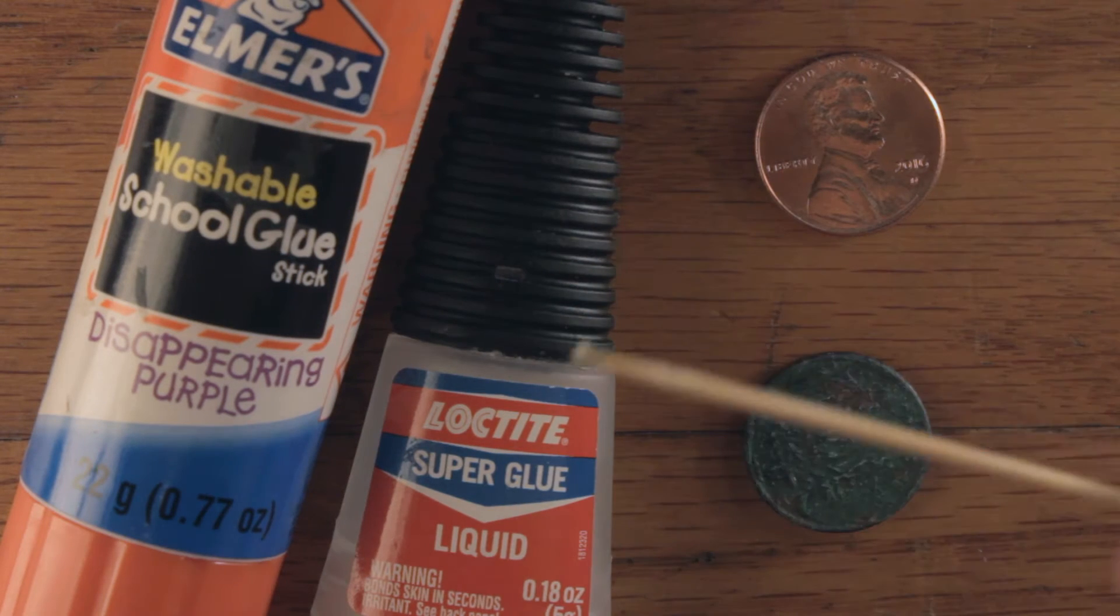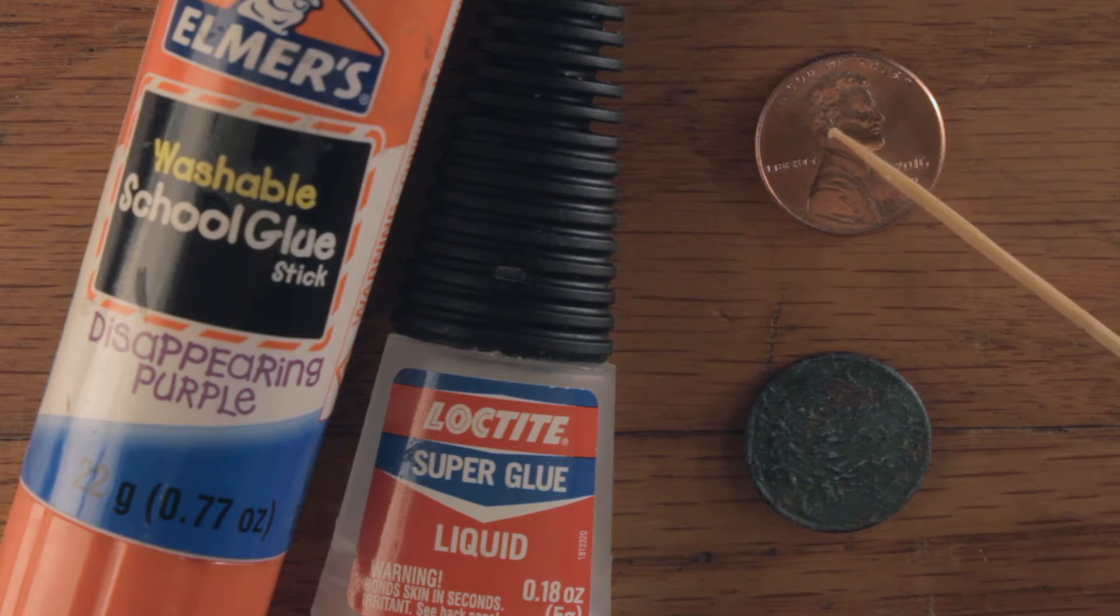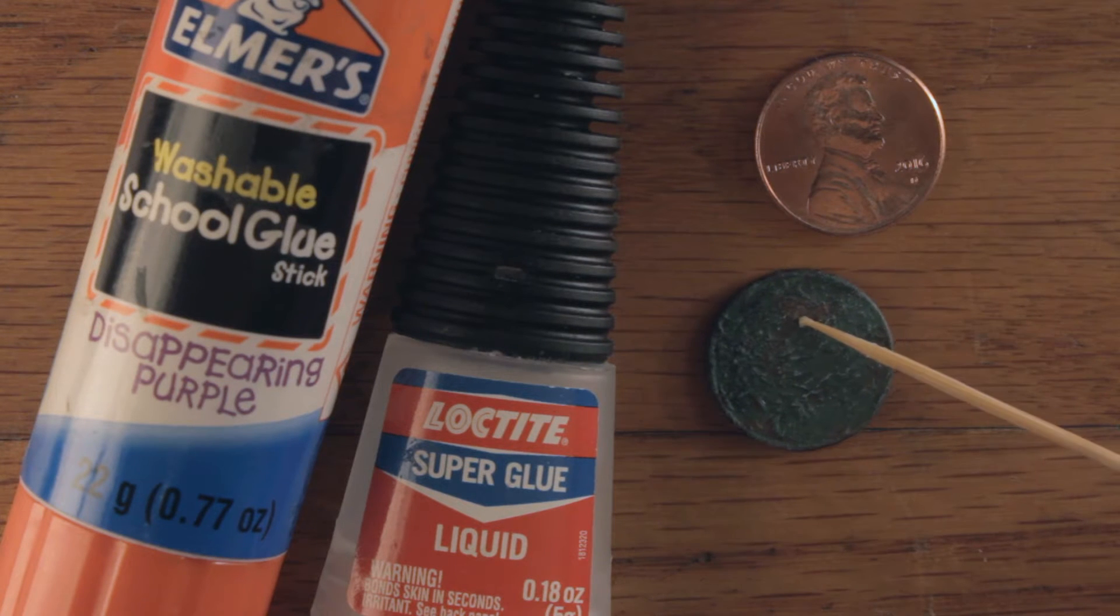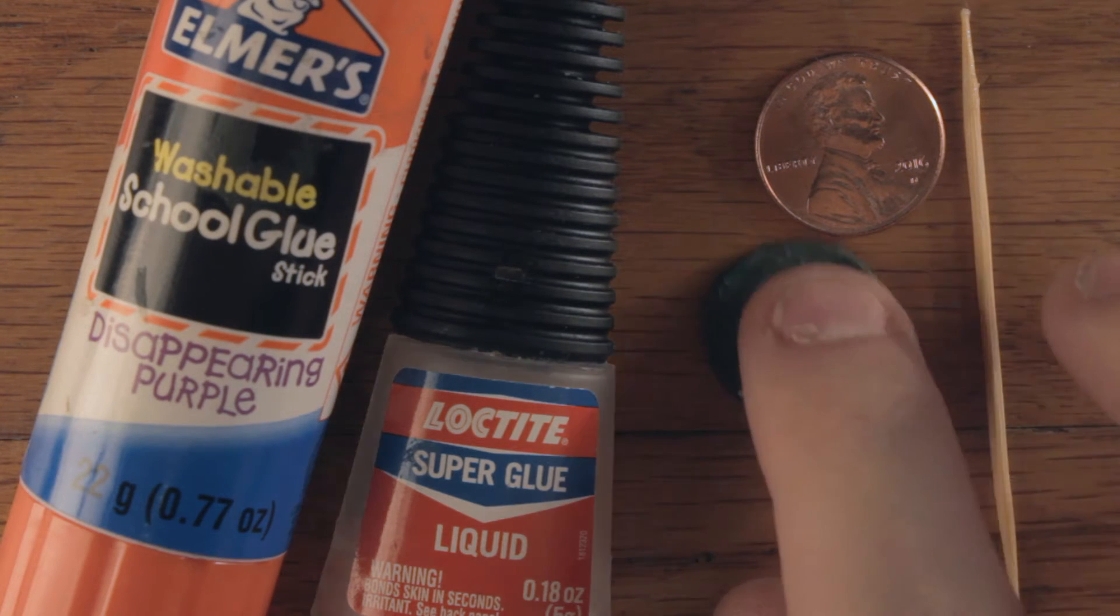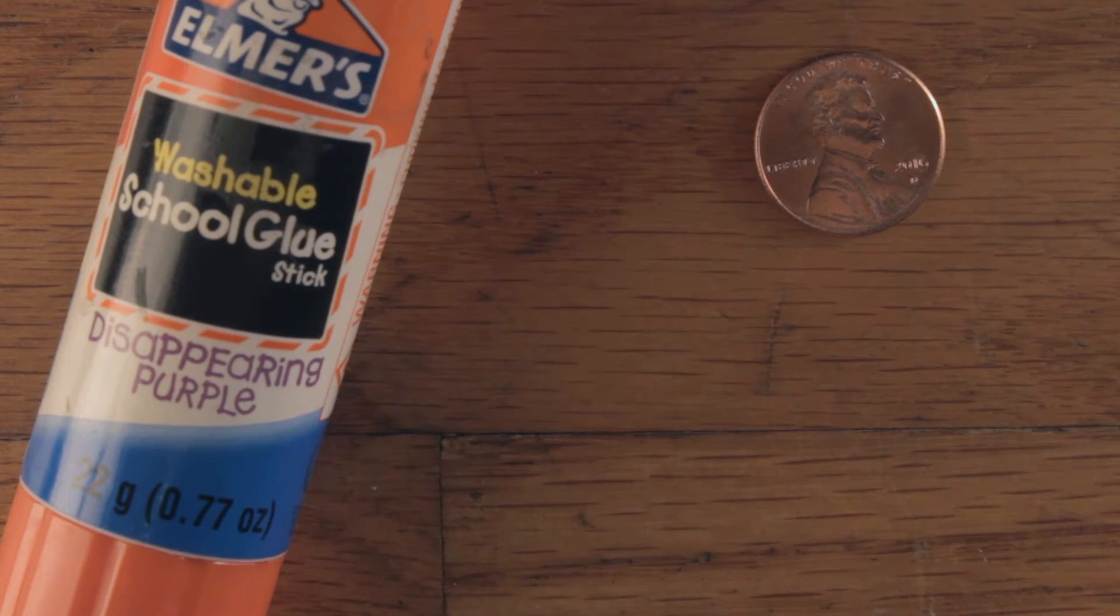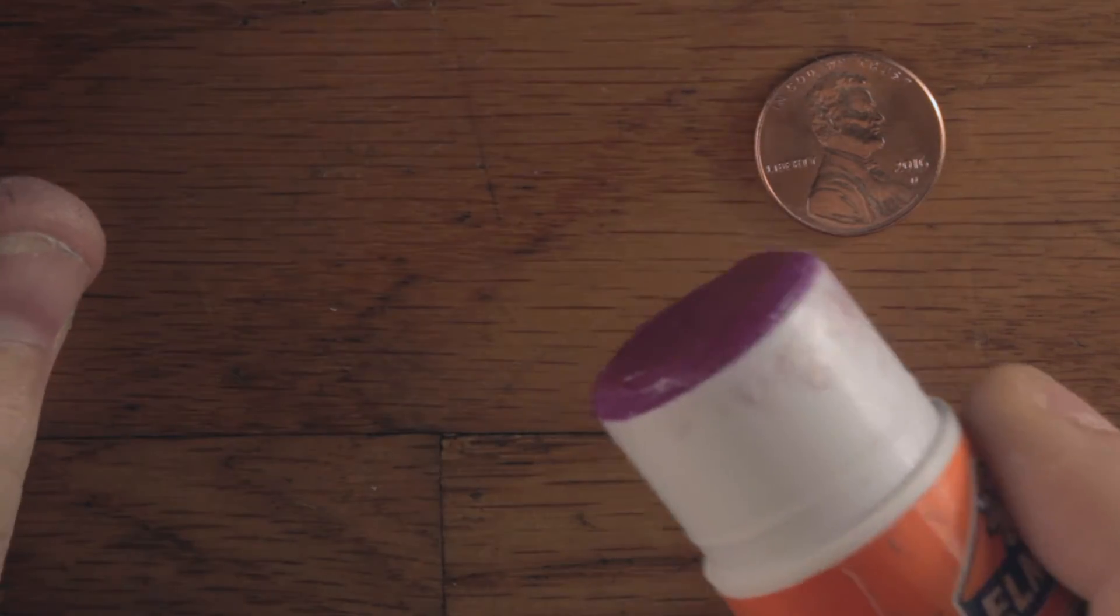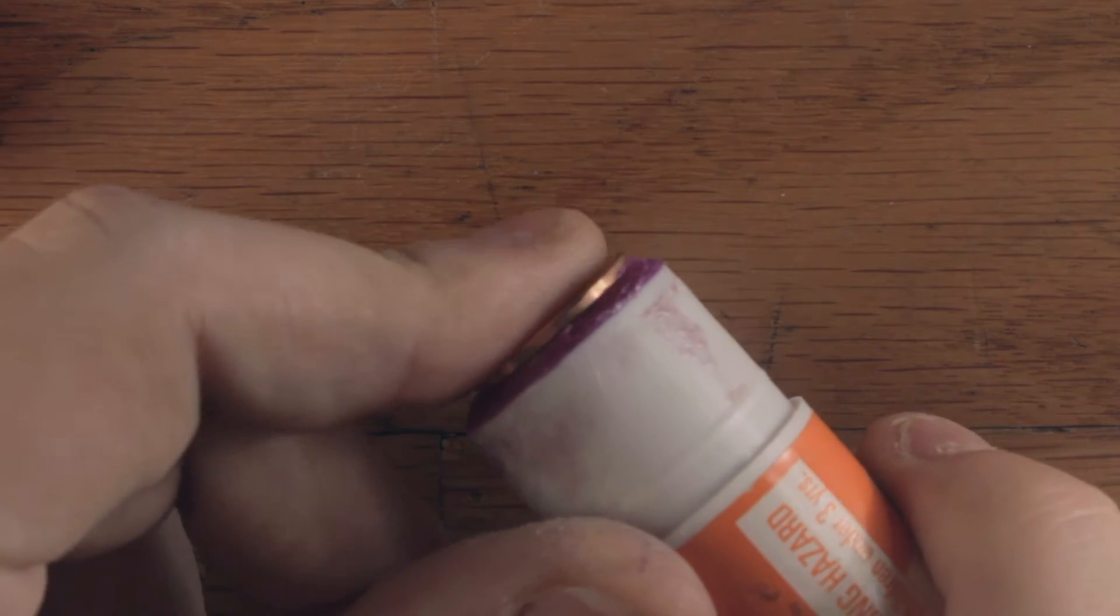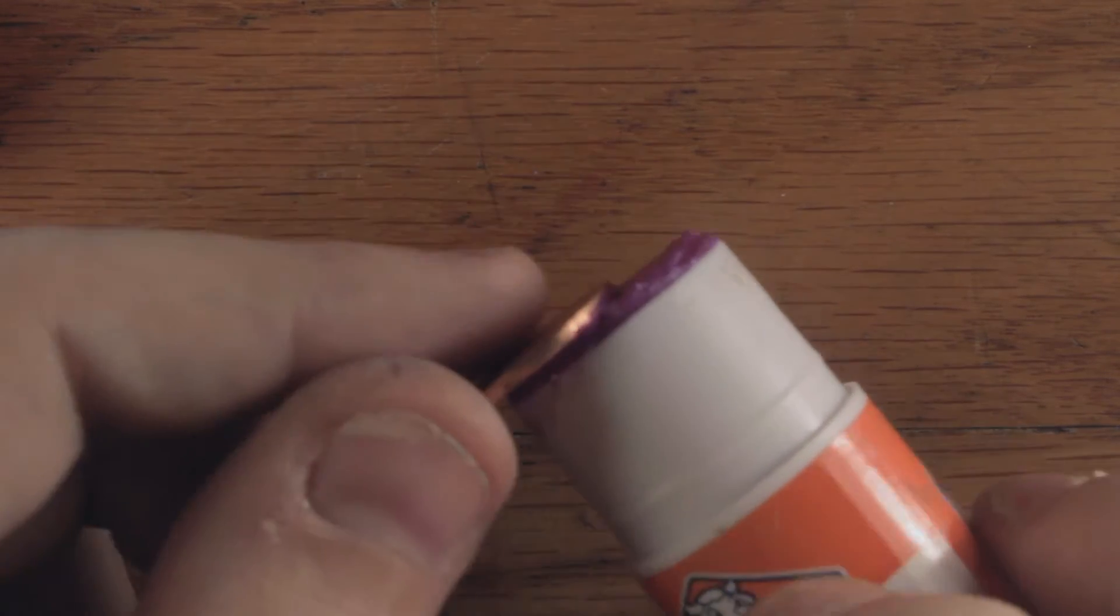The process is pretty easy. Like I said, you need stick glue and super glue and pennies. Your choice in glue stick doesn't really matter that much. I use the disappearing purple just because it is purple and it makes it easier to see. Step one is easy enough. You just take the penny and put it on the glue stick, then move it around.